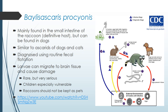Baylisascaris is mainly found in the small intestine of raccoons, which are the definitive host, but can also be found in dogs. It's similar to ascarids of dogs and cats and is typically termed raccoon roundworm, diagnosed using routine fecal flotation. It's very dangerous — the larvae can actually migrate to the brain tissue and cause damage. That raccoon roundworm larvae can migrate through the body and go to the brain causing major damage. There are documented cases every year of raccoon roundworm causing neurologic issues in children, who are more susceptible. This is one of many reasons why raccoons shouldn't be kept as pets.